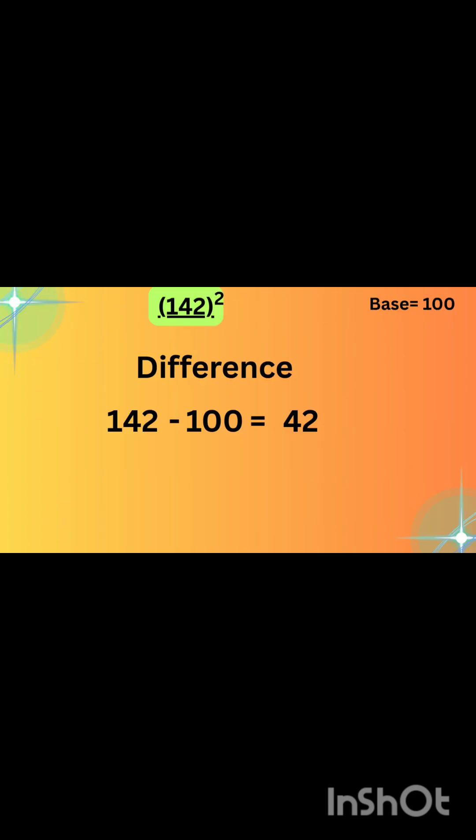Let's understand better with the help of an example. Suppose we have to find the square of 142. First, we will take the difference of our actual number from the base number. That will be 142 minus 100, which equals 42.